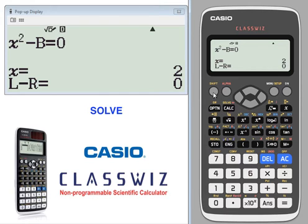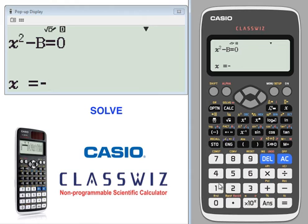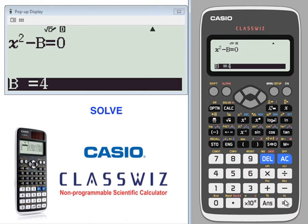Another possible solution is negative 2. To find the other solution, let's solve again. We'll start with an initial x value of negative 1 and a b value of 4.